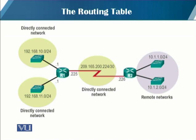The routing table of the R1 router — as you can see from the diagram — has three interfaces, and all three interfaces are connected to a directly connected network. However, for R1, in order to reach a network with IP address 10.1.1.0/24 on the right side of the diagram, that network is a remote network. Serial connections and directly connected interfaces are directly connected networks, but if a router must reach a network through another router, that network becomes a remote network in the routing table.